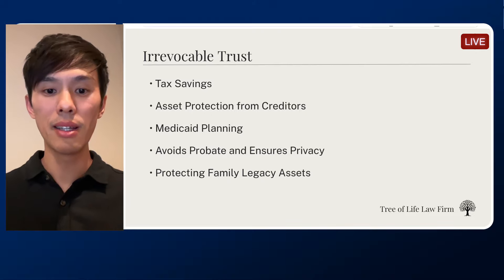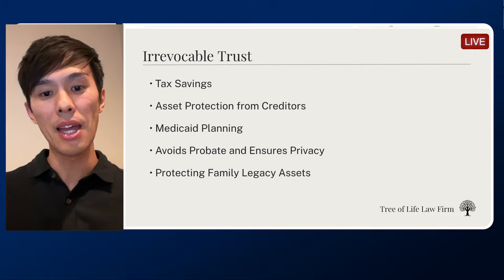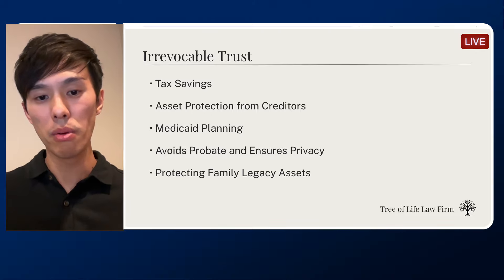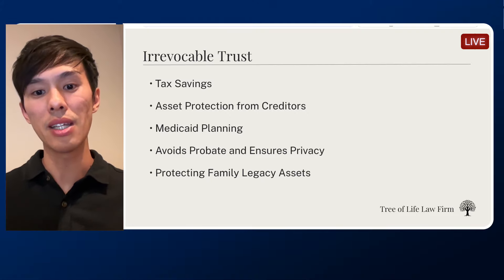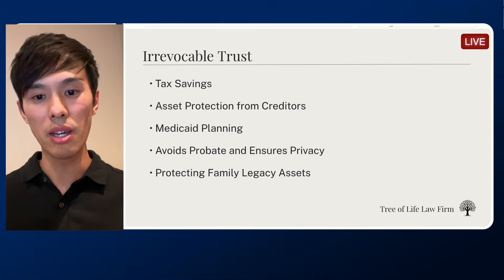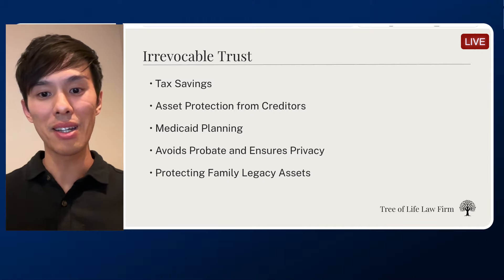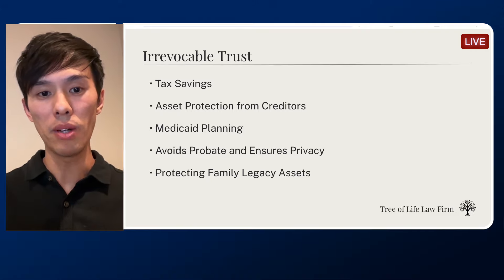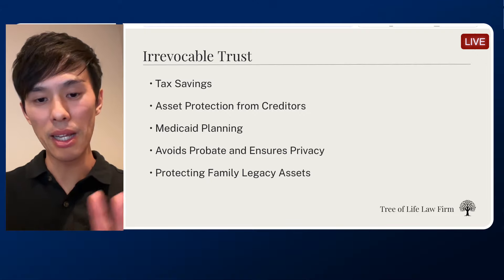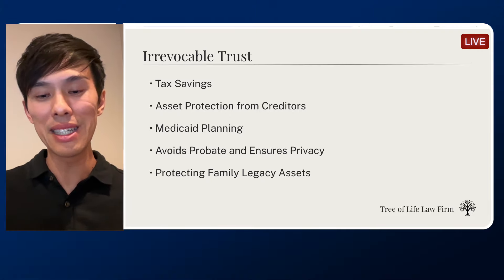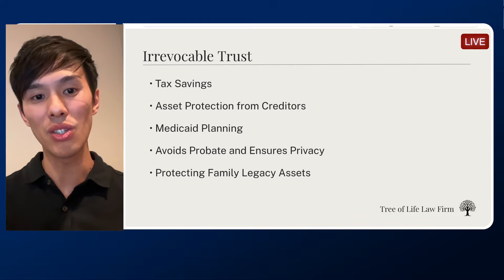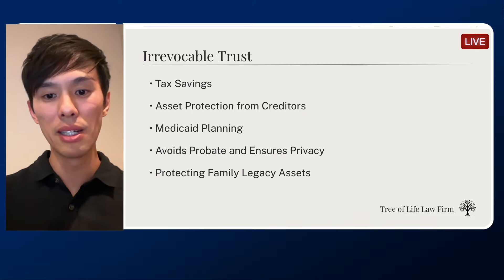Another reason for irrevocable trusts is it helps your family avoid probate and ensures privacy. Both a revocable and an irrevocable trust allow your kids to avoid probate and ensure privacy, meaning the administration of your estate and distribution to your beneficiaries are not going to be in the court system — your assets are not going to be publicly available for people to look up. An irrevocable trust also helps you protect family legacy assets like family heirlooms, real estate, and business interests, to make sure they're passed down according to your wishes.